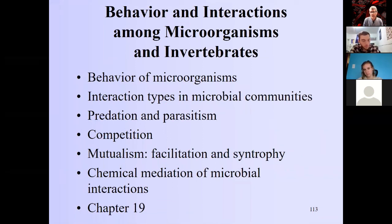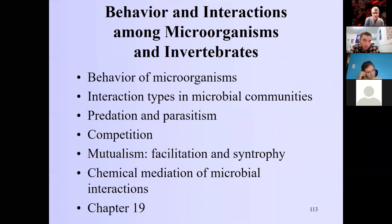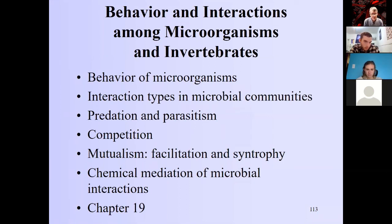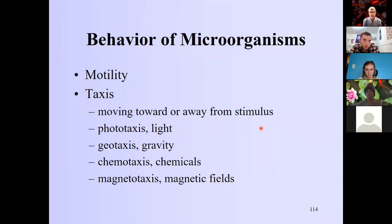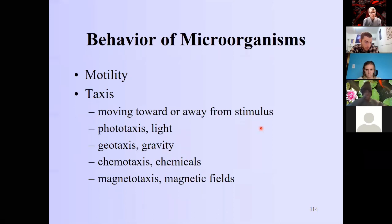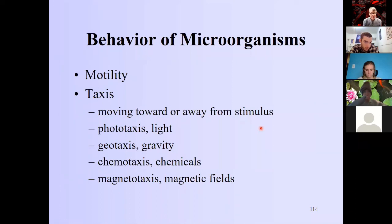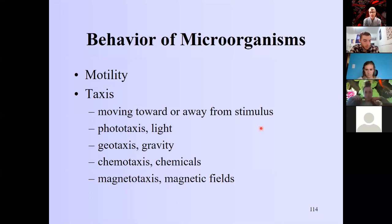We're going to talk about how interactions occur among microorganisms and how animals interact with them — including behavior, predation, parasitism, competition, mutualism, and chemical mediation. The first thing an organism must do is make a choice: stay or go. Some organisms sit still like plants, others are motile like us. Microbes are no exception — some move quite actively, and remember, at the Reynolds number scale, a bacterium swimming in water is like us swimming in tar.